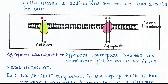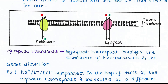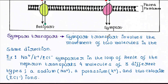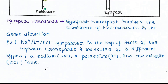Next is symport transport. Symport transport involves the movement of two molecules in the same direction. An example is the sodium-potassium-chloride importer in the loop of Henle of the nephron, which transports four molecules of three different types: one sodium, one potassium, and two chloride ions.